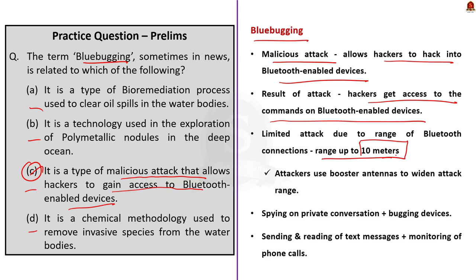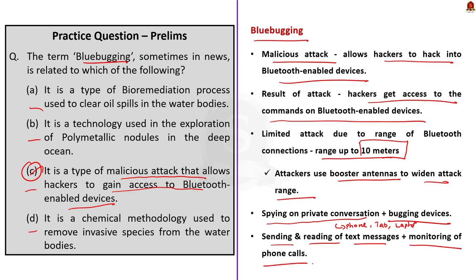The bluebugging attack is often limited due to the range of Bluetooth connections — up to only 10 meters, so hackers need to be within 10 meters to carry out such an attack. However, hackers can use booster antennas to widen their attack range. Bluetooth-enabled phones and laptops are highly vulnerable. Through bluebugging, hackers can spy on private conversations, bug devices like phones, tablets and laptops, control them remotely, send and read text messages, and even monitor phone calls.